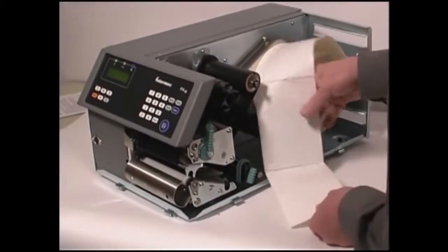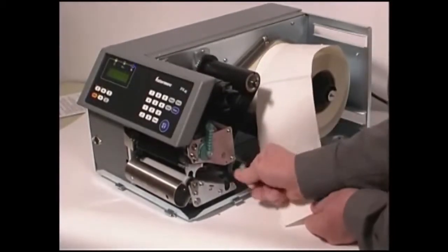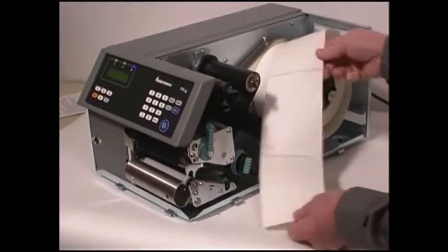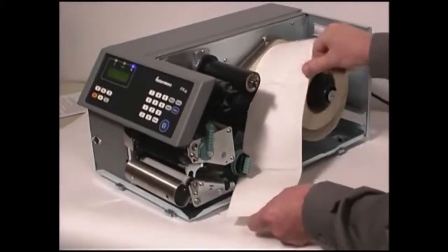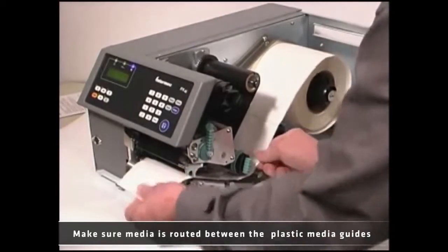Route the media under the slack absorber and forward toward the print mechanism. The slack absorber can be rotated for better access and then snap-locked in the open position. Route the media through the print mechanism and push it in as far as it will go.